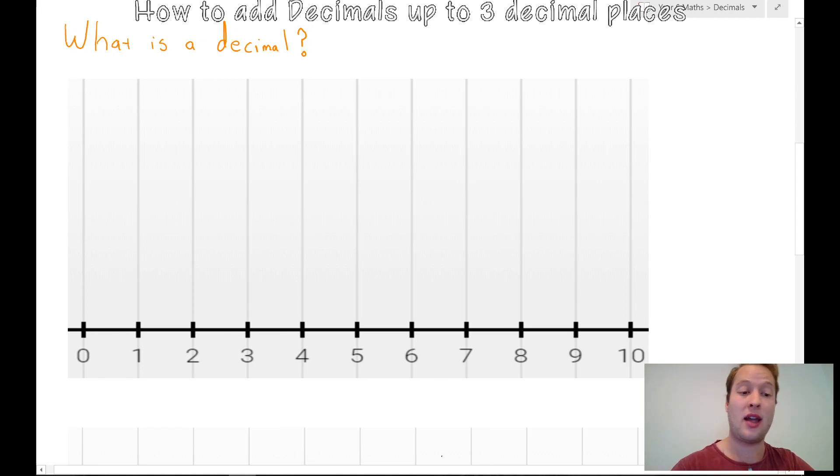I here have a number line between 0 and 10. They're what we call whole numbers or integers. When we introduce decimals, the word decimal, DEC, just stands for 10. So, it's basically the idea of having a whole number and then breaking it up into parts.